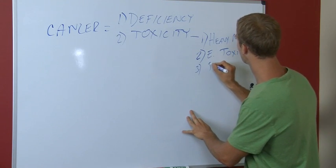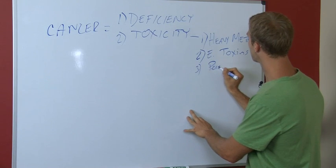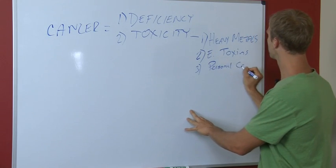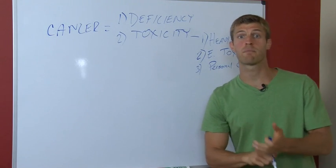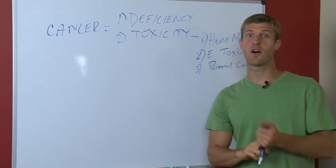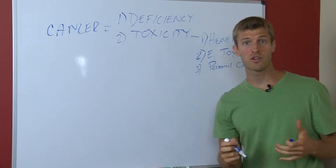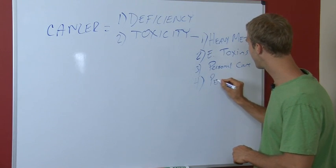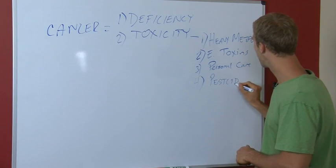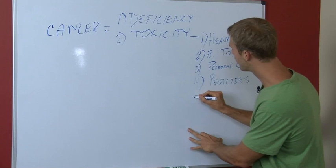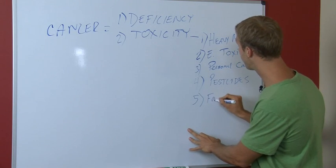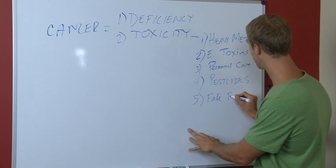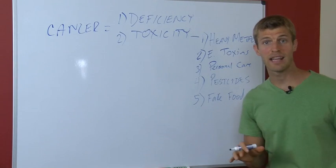Number three, personal care products. Personal care products, maybe the shampoo you have at home, the deodorant you're using, the different moisturizers. These things all cause cancer. Number four is going to be pesticides, hormones, antibiotics. A lot of those toxins you'll put in your food. Number five is going to be fake food. Foods that aren't really real will cause toxicity in your body.